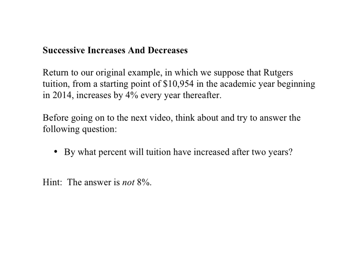Thus far, we've looked at tuition increasing once or decreasing once. Let's go back to our original example with 4% growth every year, starting from $10,954. Before going on to the next video, think about and try to answer the following question: by what percent will tuition have increased after two years? There is 4% growth the first year and then again 4% growth the second year. Here's a hint: the answer is not 8%.